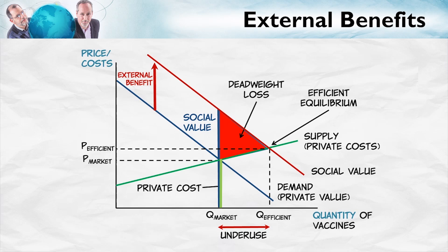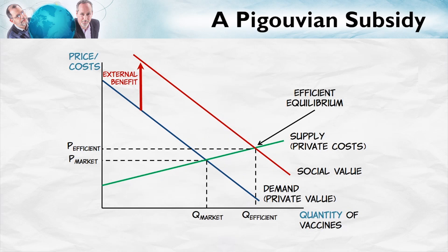So that's the analysis of an external benefit: the social value is higher than the private value, so we get too few flu shots, deadweight loss, and under-use. Can you guess one method of dealing with this under-use? When we had external costs, we had over-use, and one solution was a Pigouvian tax. Flipping it around, when we have under-use, one solution is a Pigouvian subsidy.